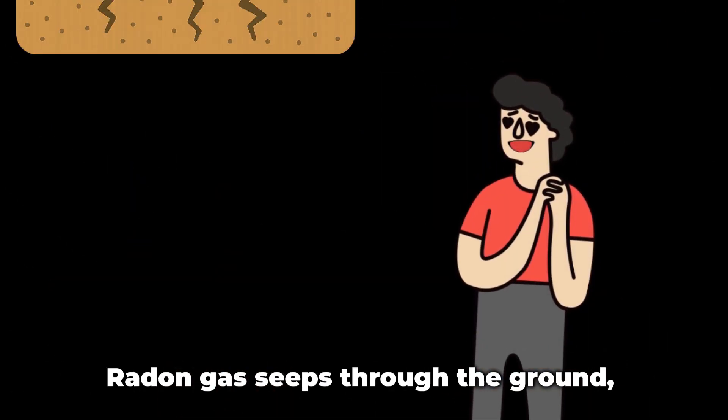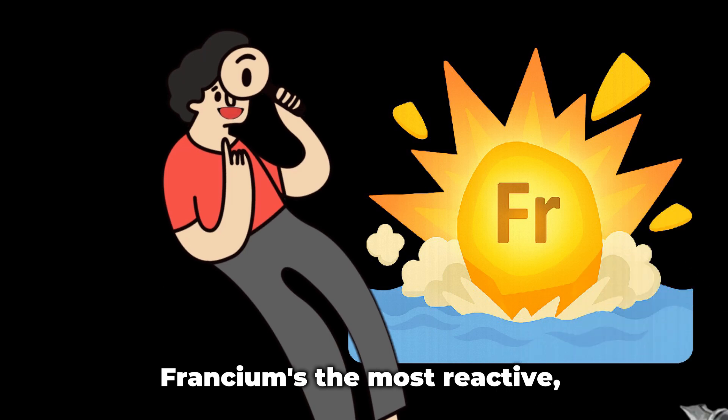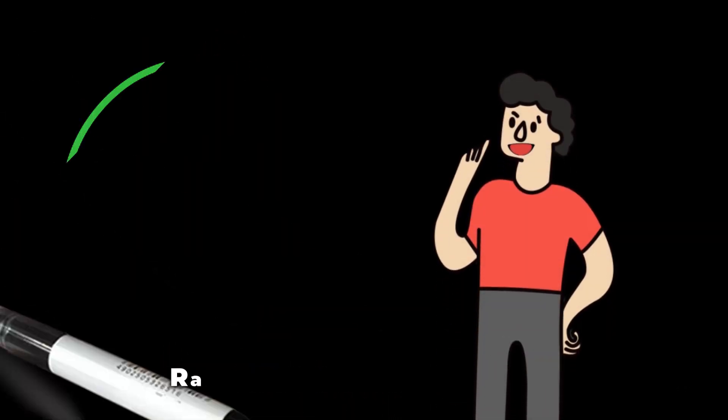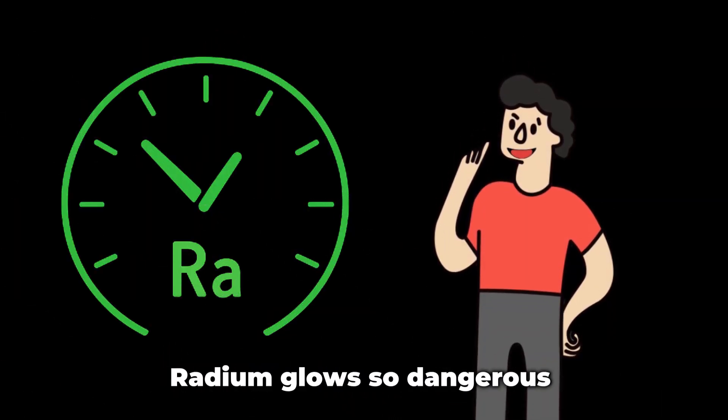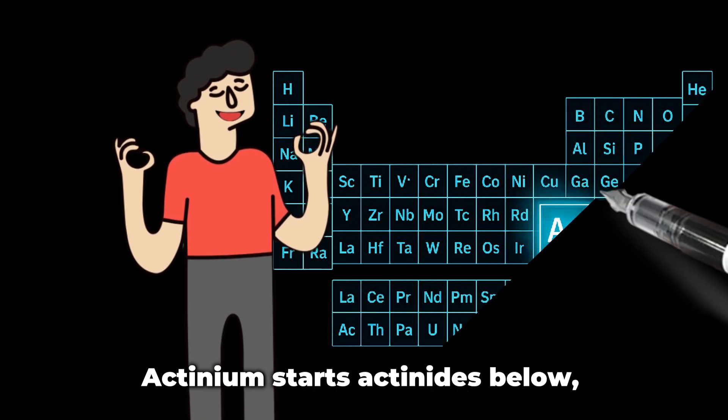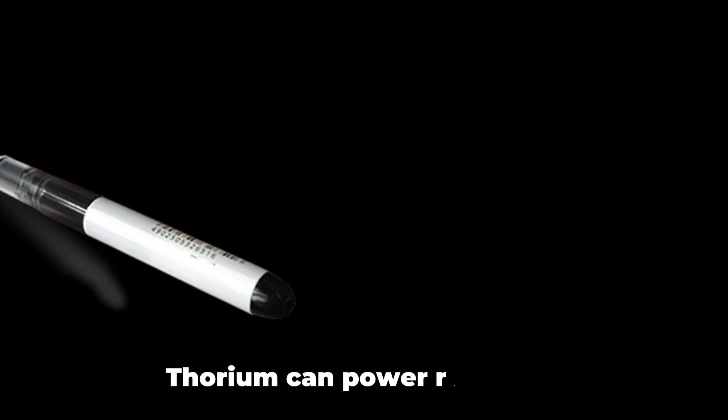Polonium's radioactive. Astatine's unstable and fast. Radon gas seeps through the ground. Francium's the most reactive. Radium glows so dangerous. Actinium starts actinides below.